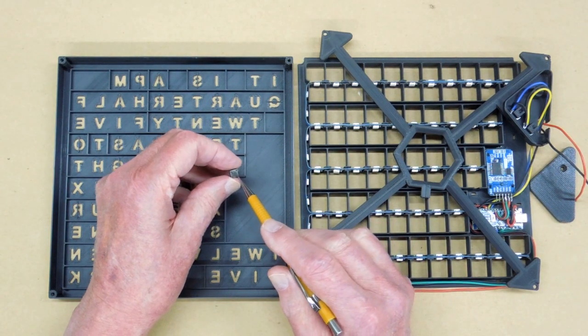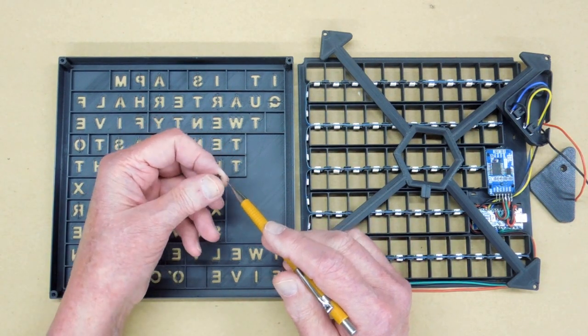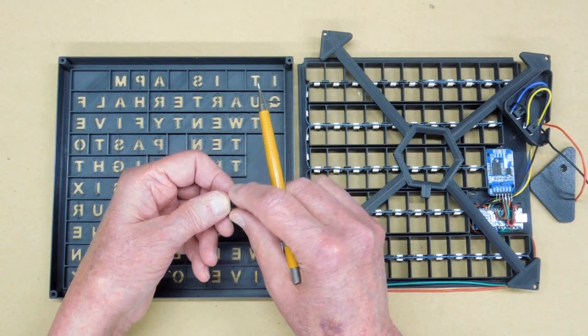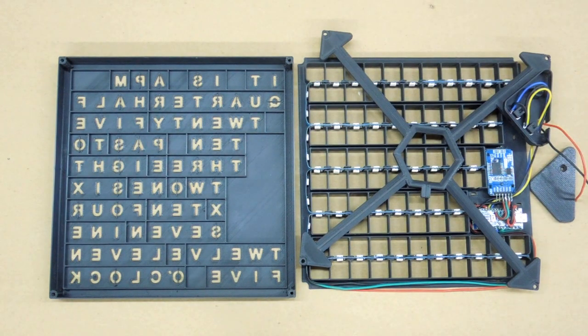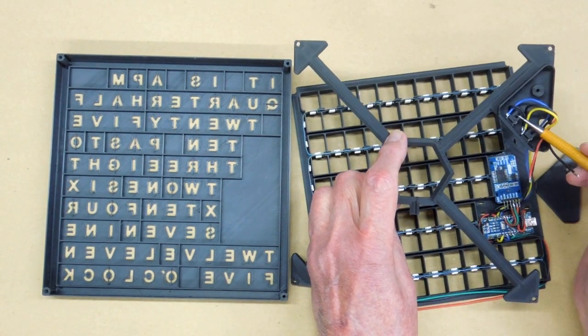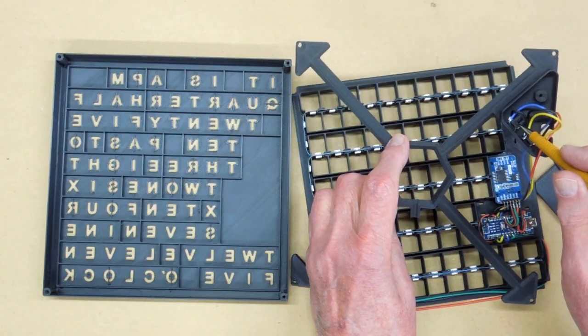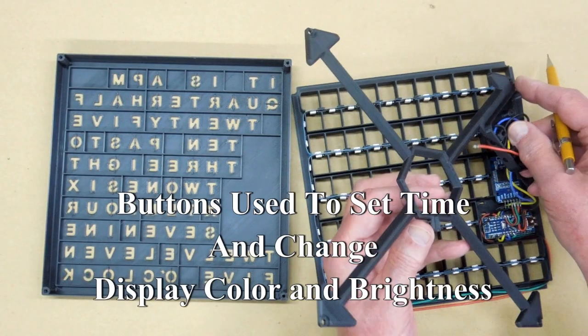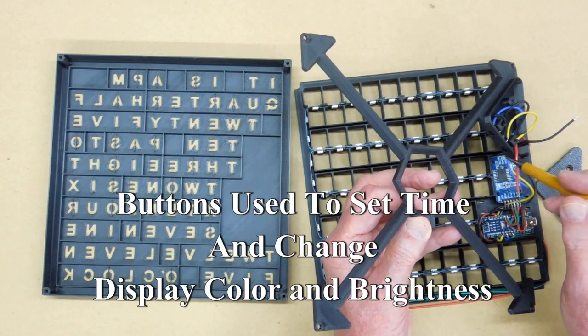This uses one of these little tiny push button switches and there is a right and a wrong way to wire one of these so you do need to pay attention. Daniel's articles are very descriptive. He gives all the information that you will need. And these little plastic pieces push in here and retain those push buttons. Those are used for setting the time.